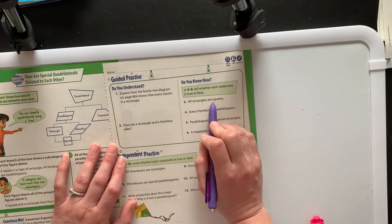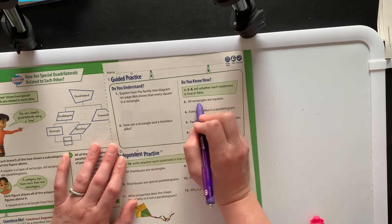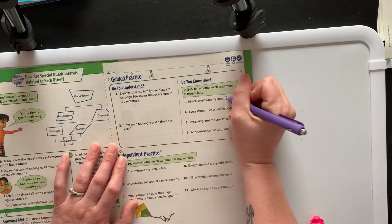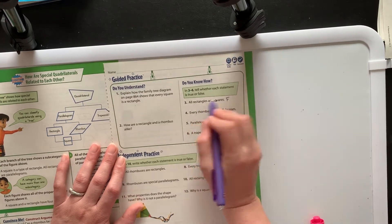This says all rectangles - you got to make sure you read these in order - all rectangles are squares. Well, that's not true. All squares are rectangles, but not all rectangles are squares.